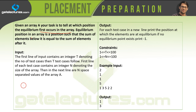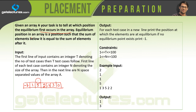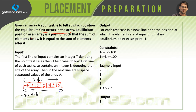Let us assume we have an array with the elements: minus 7, 1, 5, 2, minus 4, 3, and 0. The equilibrium point means we should find a point in this array such that the sum of elements to the left of it equals the sum of elements to the right of it. For example, if I take the position where we have number 5, the sum of the left elements is minus 7 plus 1, which equals minus 6, and the sum of the right elements is 2 plus minus 4 plus 3, which equals 1. So left sum is minus 6 and right sum is 1 — they are not equal.